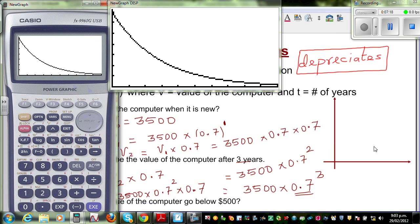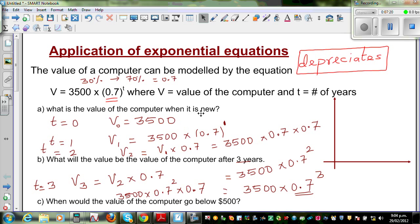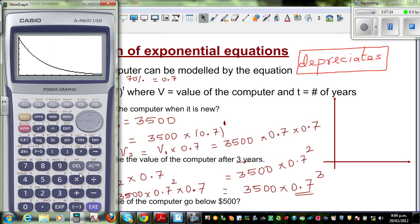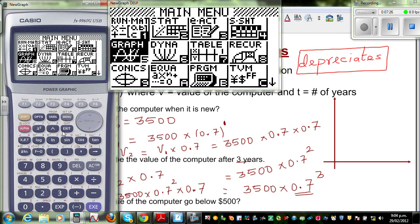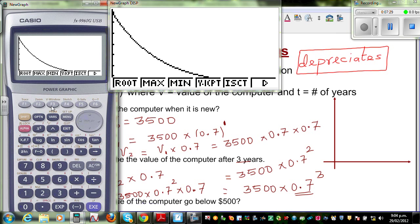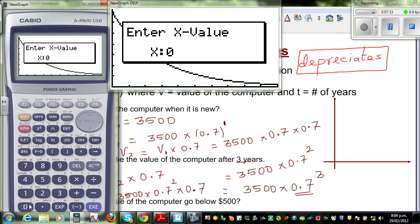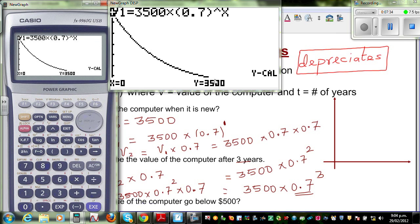So, the first question was, what's the value when it is new? That means, in other words, they are asking you, what's the y value when x is equal to 0. So, you go G solve, and type in y calc, when x is equal to 0. Which is 3500.